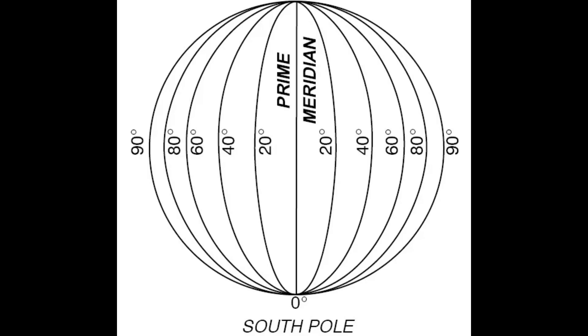Lines of longitude are vertical lines that stretch from the North Pole to the South Pole. The main line of longitude is called the prime meridian, represented as zero degrees longitude. Moving east of the prime meridian, each line of longitude increases by one degree.